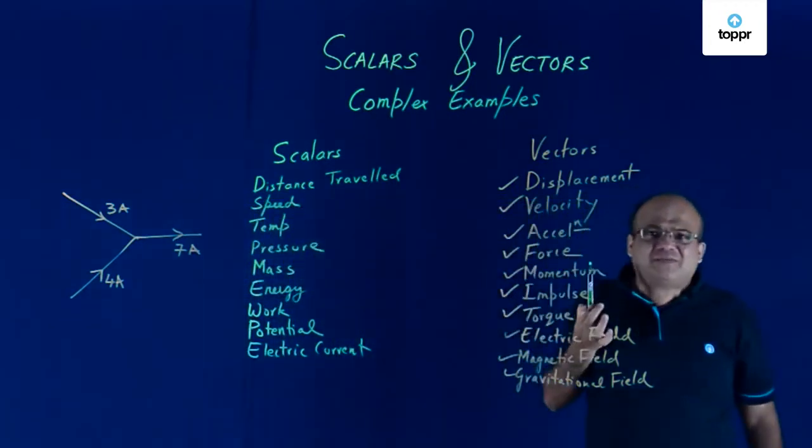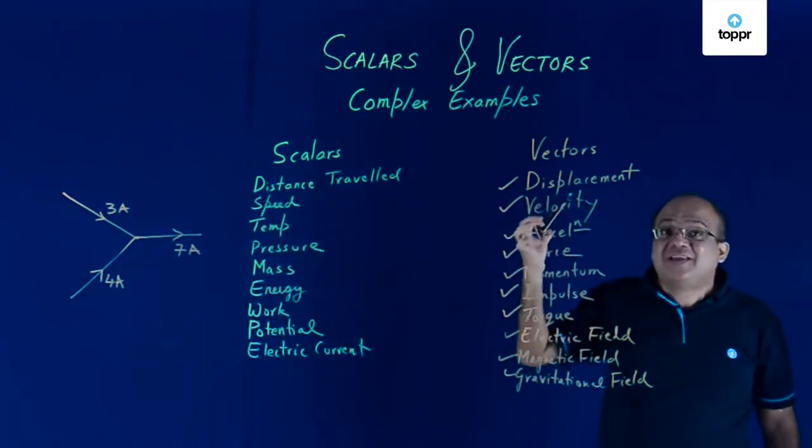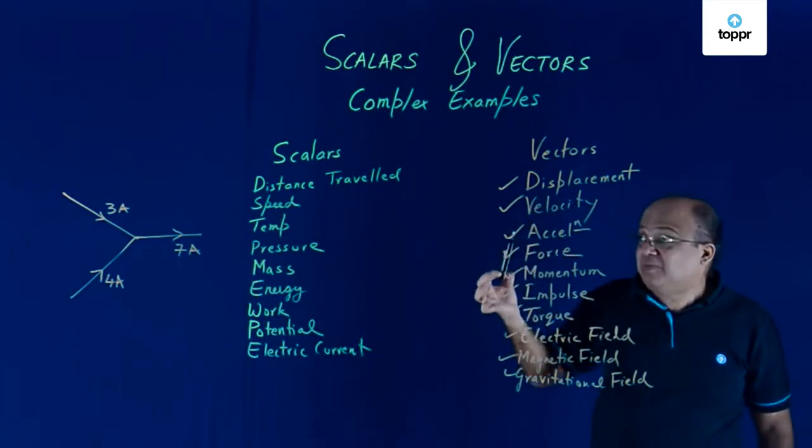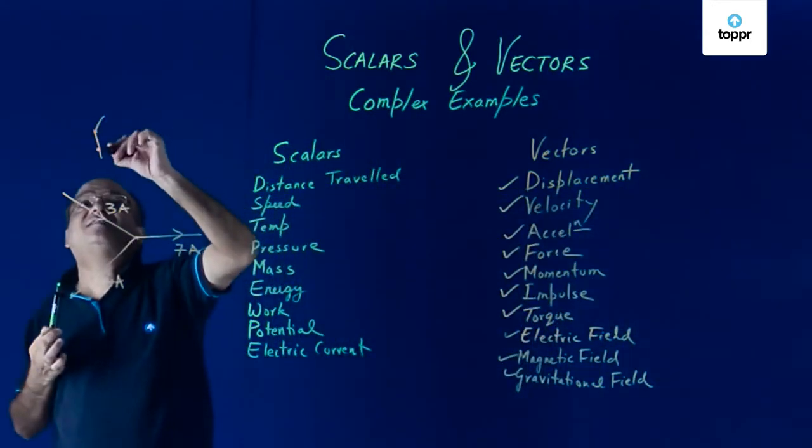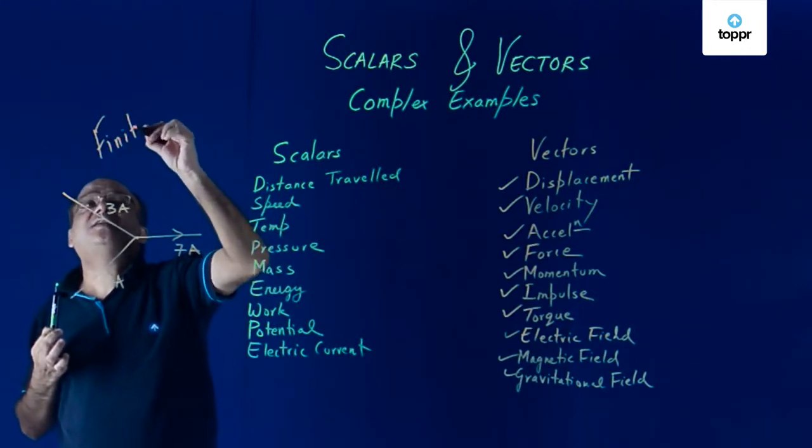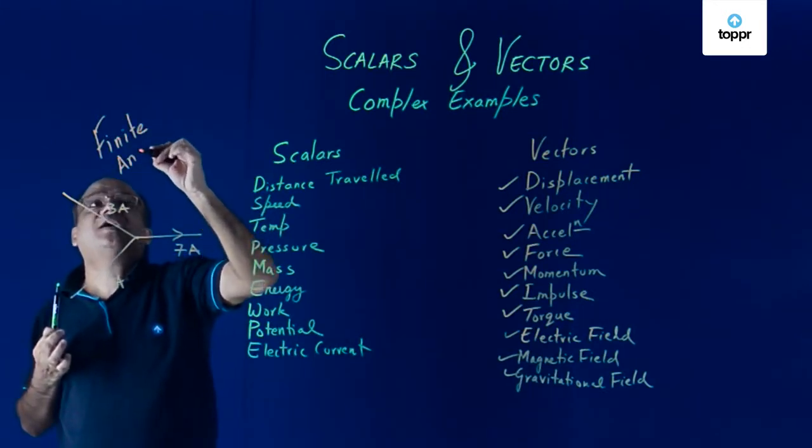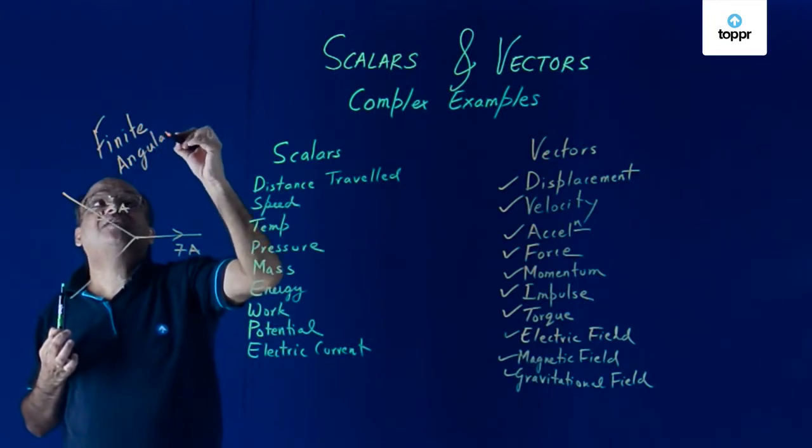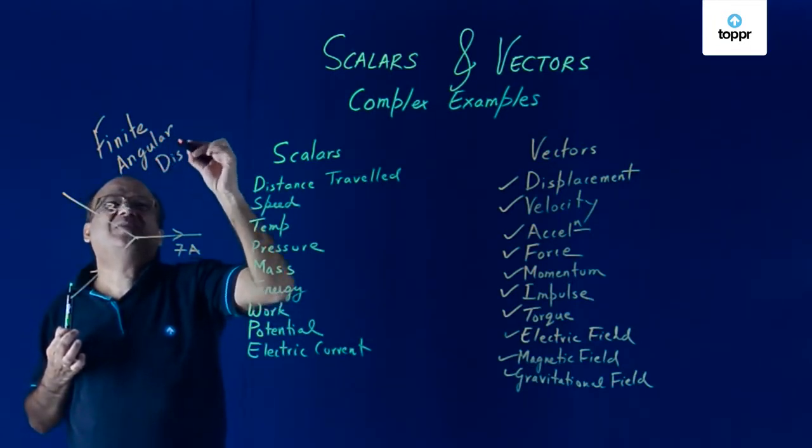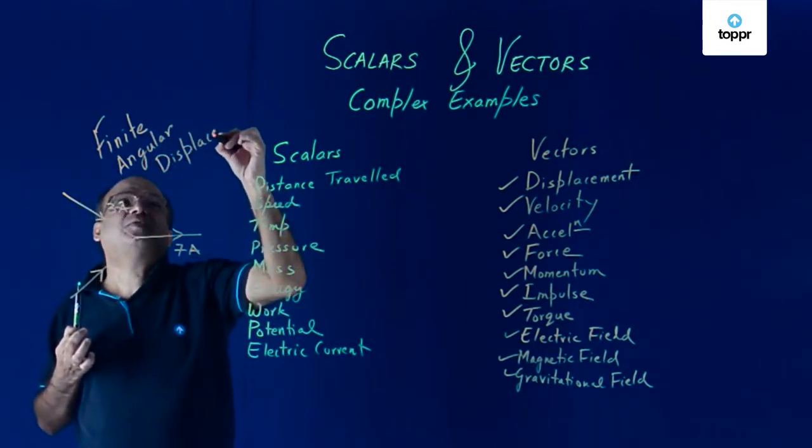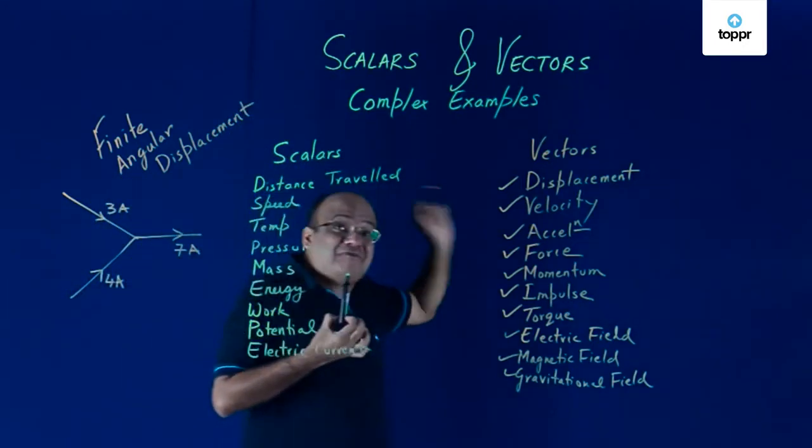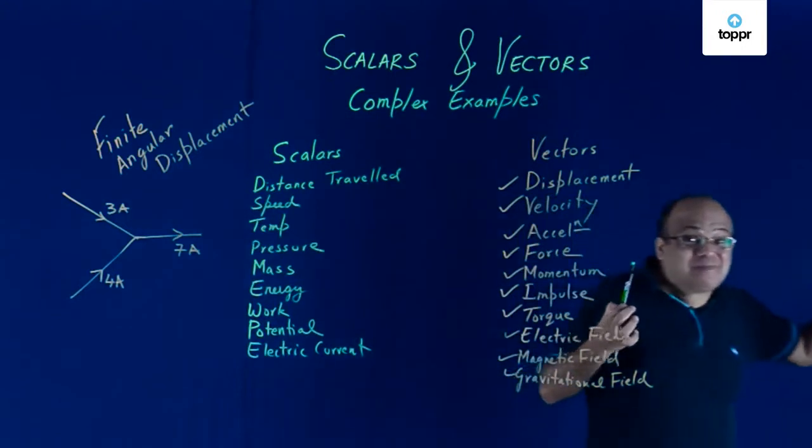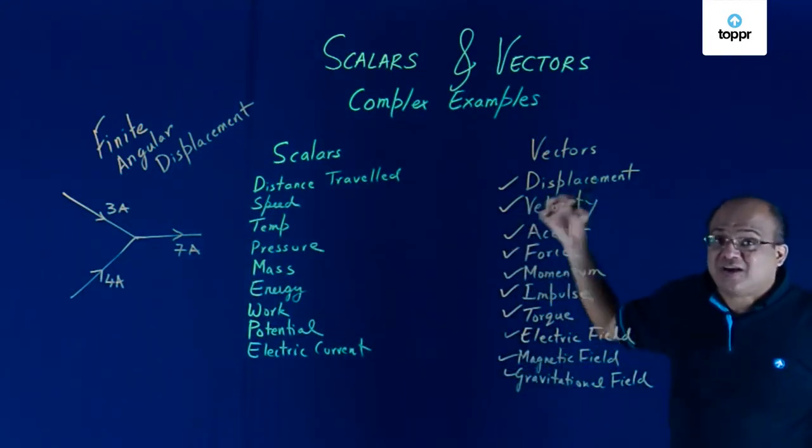That finite angular displacement is not a vector. So remember this. Finite angular displacement is not a vector. This is going to learn in detail when you study rotational mechanics chapter. For the time being, you remember finite angular displacement is not a vector.